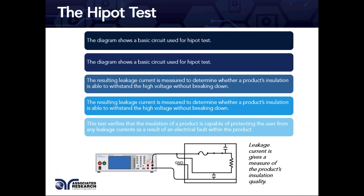The resulting leakage current also indicates the quality of the insulation. Application of high voltage across any insulation barrier will result in some leakage current trying to flow through it — that's what insulation is meant to prevent. By analyzing the leakage current, engineers can determine whether the insulation is adequate and will protect the user or anyone coming in contact with the device.